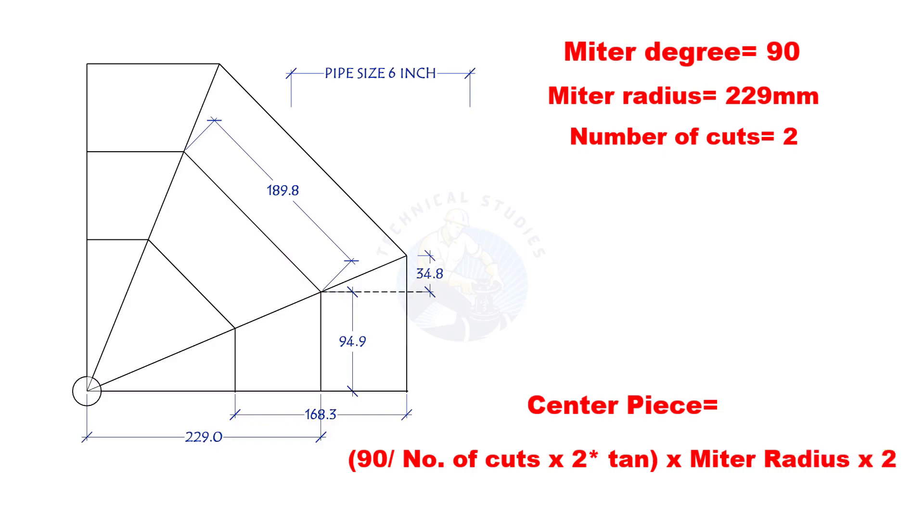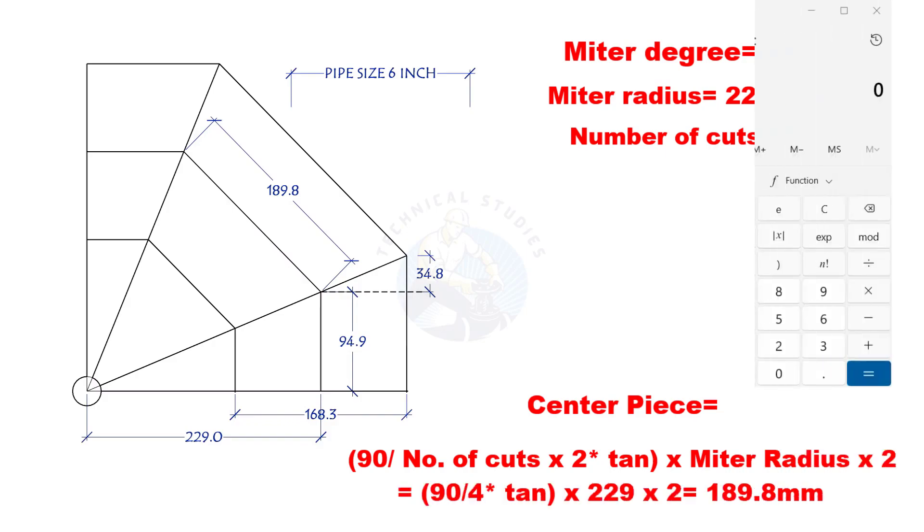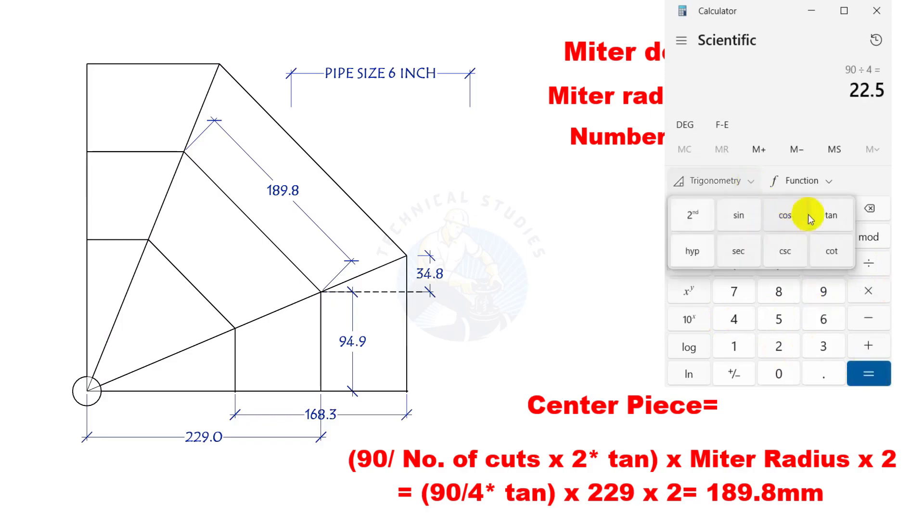90-degree divided by number of cuts times 2 tan multiplied by the mitre radius times 2. That is nearly 189.8 mm.